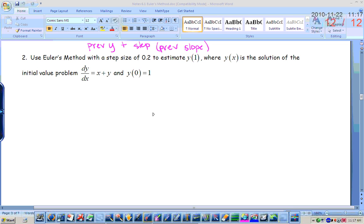Alright, use Euler's method with a step size of 0.2, so they're giving us that automatically, to estimate y of 1. So that's what we're trying to get to. We're trying to get to the y value when x is 1, where y of x is the solution to the initial value problem dy/dx equals x plus y and y of 0 equals 1.